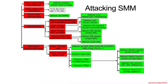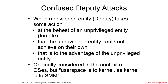Our next type of SMI implementation bug is called a confused deputy attack. The mitigations include all the common ones plus one extra that has to do with the particulars of this attack. The confused deputy attack is a general class of logic vulnerabilities. It basically has to do with interactions between a privileged entity — the deputy — and an unprivileged entity, the notional inmate.